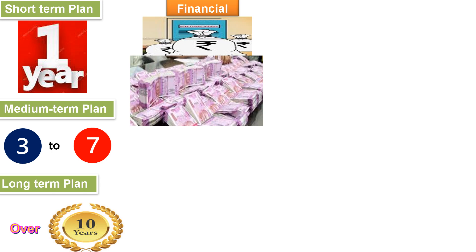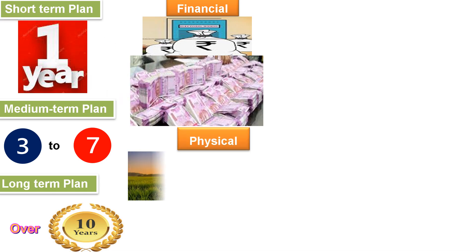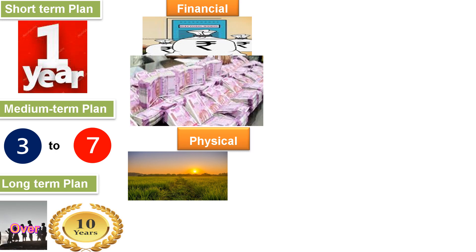Financial planning refers to how much money and resources are available for executing the plan. Physical planning refers to how much development is needed — that is the target-based physical planning.